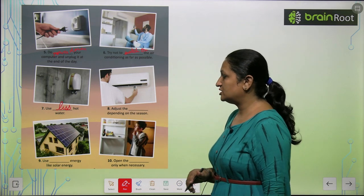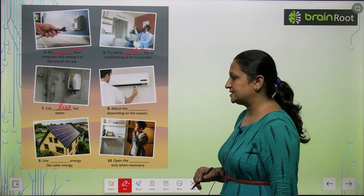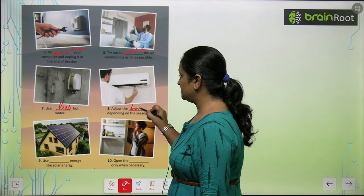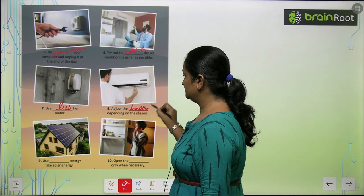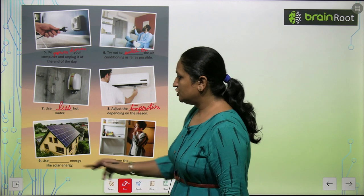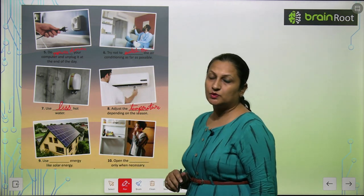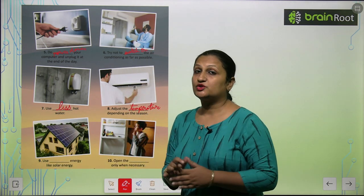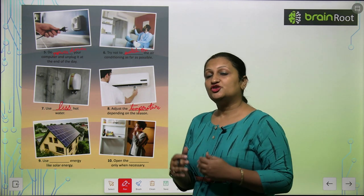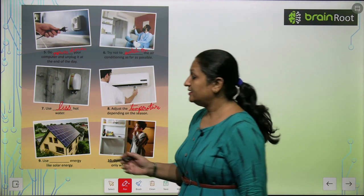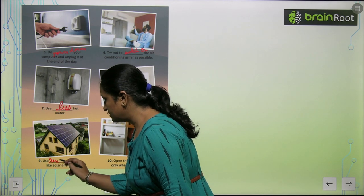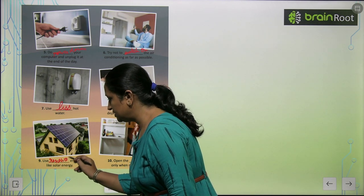Adjust the blank depending on the season — adjust the temperature. Use blank energy like solar energy. Solar energy ki tarah hi, hume doosari energies ko bhi use karna chahiye, jinko hum bolte hai renewable source of energy. Renewable.